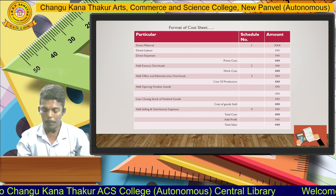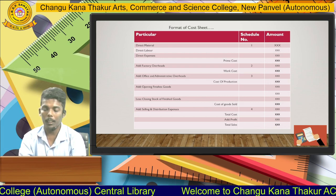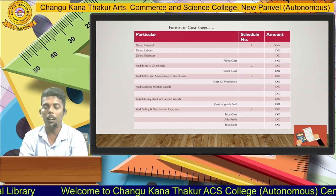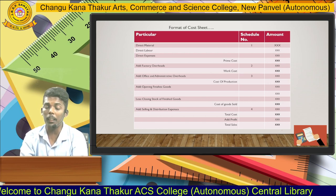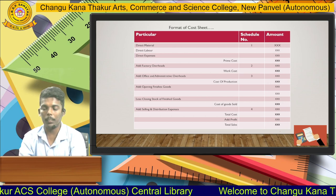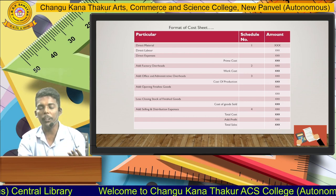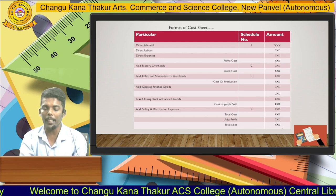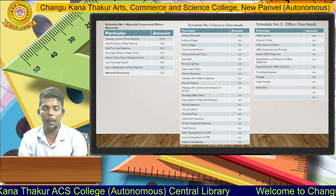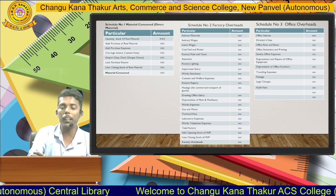According to management planning, we can add the profit of the product, because management fixes the selling price and according to that selling price we set the profit margin. We use a simple format for the purpose of practical cost sheet problems, where we use schedules for the computation of direct material, factory overheads, office and administrative overheads, and selling and distribution.